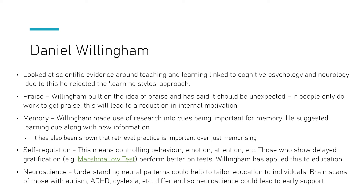Willingham also mentioned self-regulation — the ability to delay gratification. If you can put in time and effort over a long period (your GCSEs take at least two years before you get your reward of strong outcomes), those able to control their behaviour, emotions, and attention tend to do a lot better. Willingham said you should look at your self-regulation and try to improve it. He also suggested neuroscience — brain scans showing which brain areas are active during tasks — could help identify neurotypical individuals or those with learning needs such as autism, ADHD, or dyslexia, potentially leading to early support.